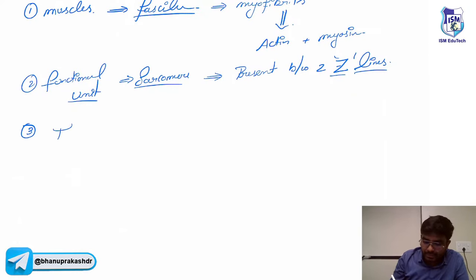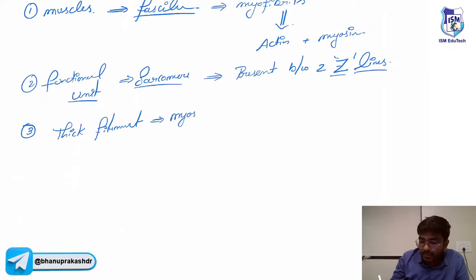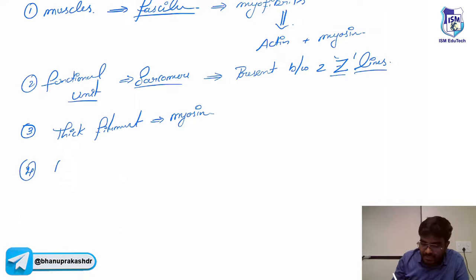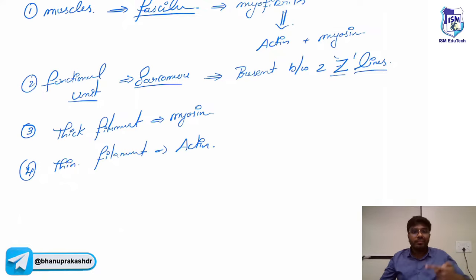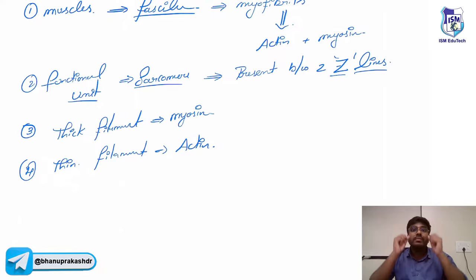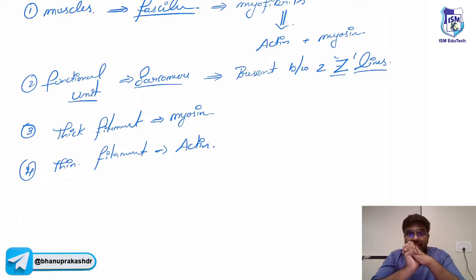What is the thick filament? Myosin is called the thick filament. What is the thin filament? The thin filament is called actin. There will be myosin, actin, myosin, actin alternating — thin filament is actin, thick filament is myosin.